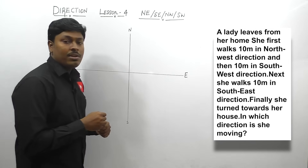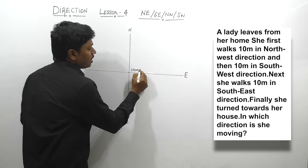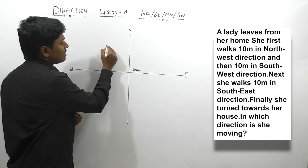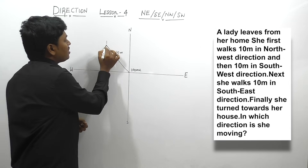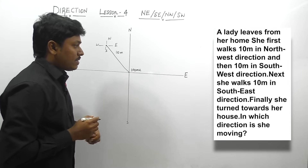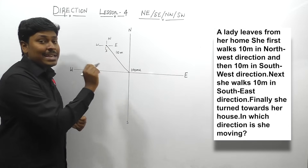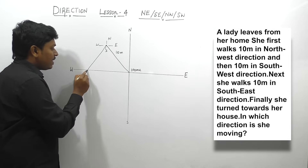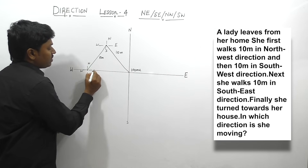She first walks 10 m in north-west direction. Let me assume that the lady leaves from her home here. From here, she is travelling 10 m towards north-west. After reaching this point, our trick is to draw a small direction — north, south, west and east. Then she goes 10 m towards south-west direction. From that point, she is again travelling 10 m towards south-west. After reaching this point, draw a small direction — north, south, west and east.